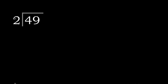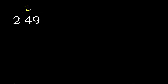49 divided by 2. 4 is not less than 2, therefore with 4: 2 multiplied by 3 is 6, but 6 is excessive. 2 multiplied by 2 is 4, 4 is not greater than 4.